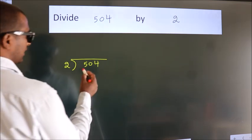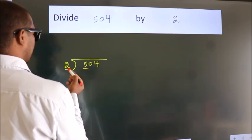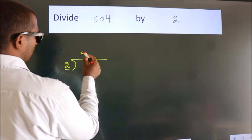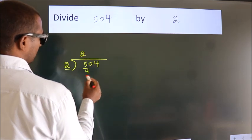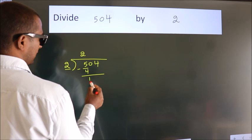here we have 5, here 2. A number close to 5 in 2 table is 2 2s, 4. Now we should subtract. We get 1.